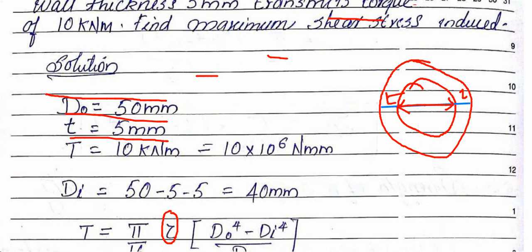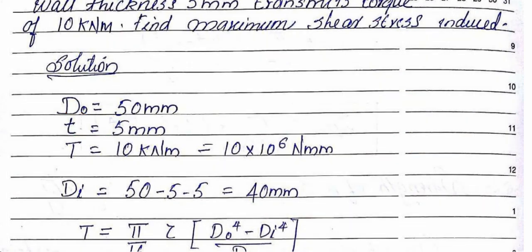D_inner = 50 - 5 - 5 = 40mm. Now we have all key values: D_outer and D_inner. We substitute these values into the formula and cross multiply to solve.